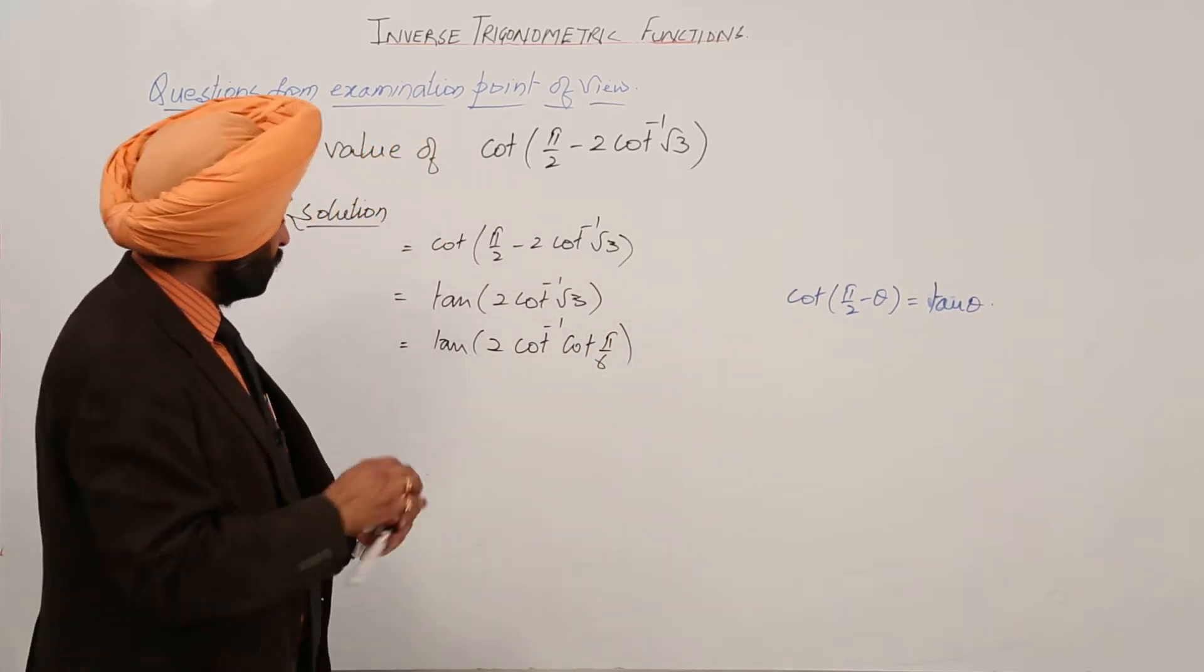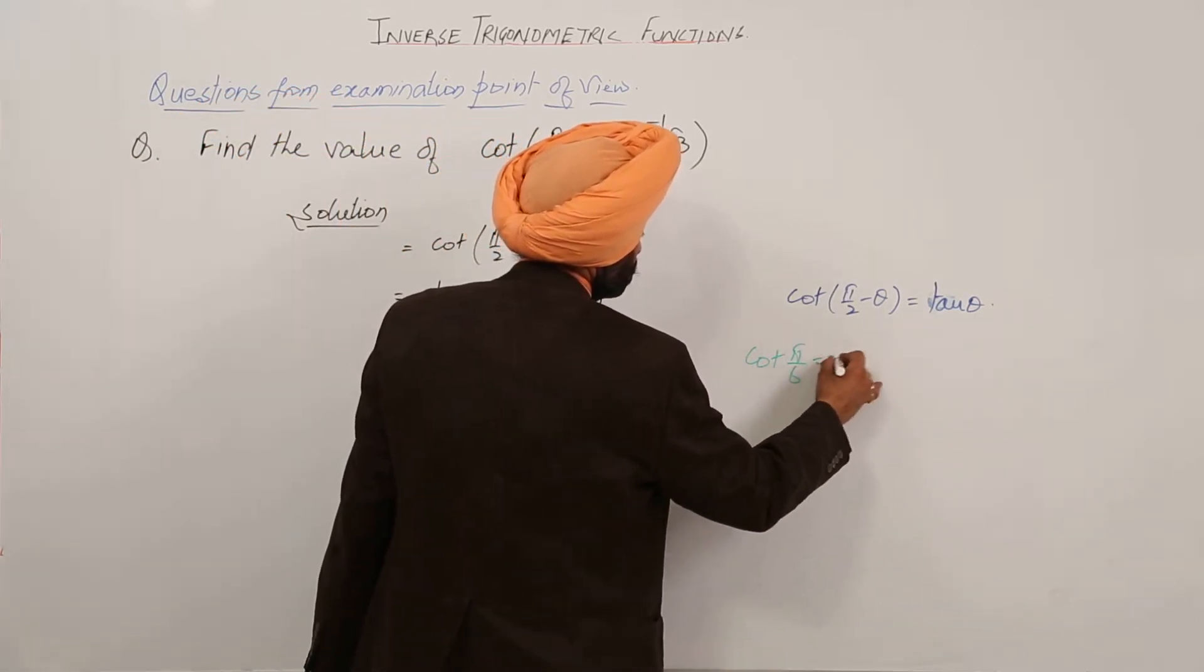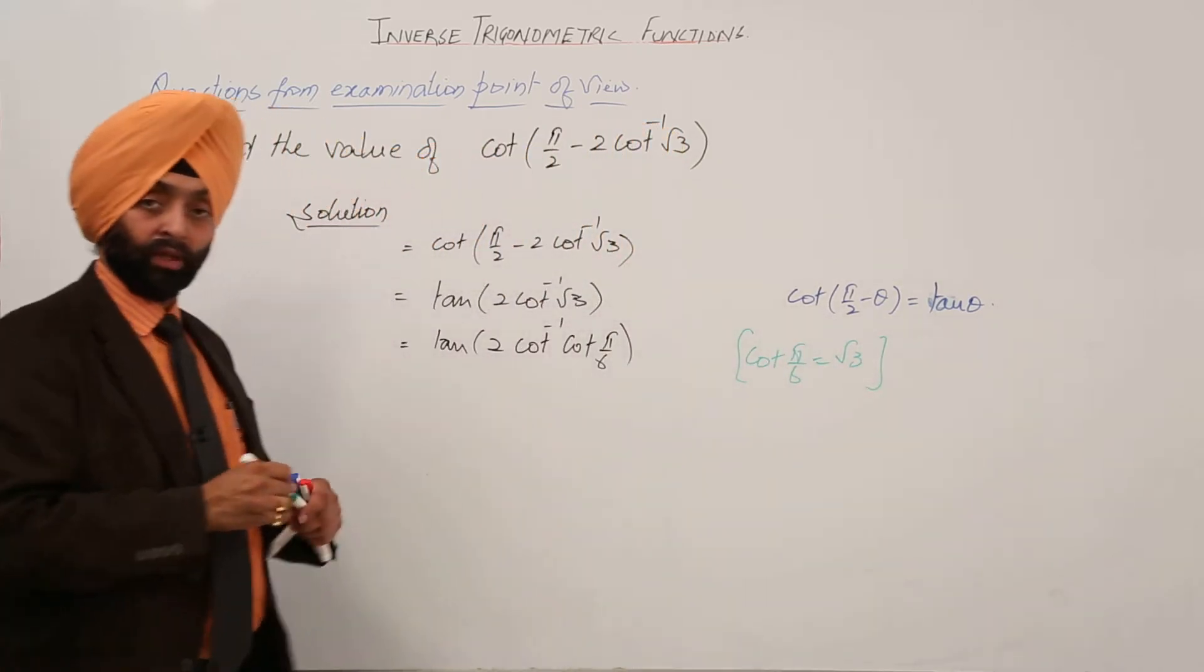We can write this because cot(π/6) is equal to √3.